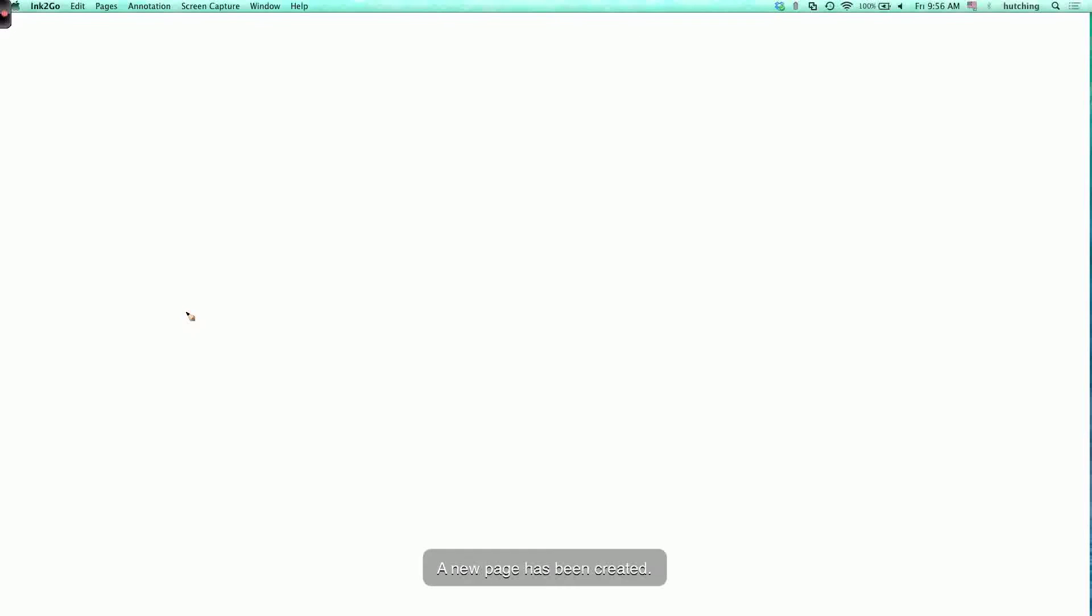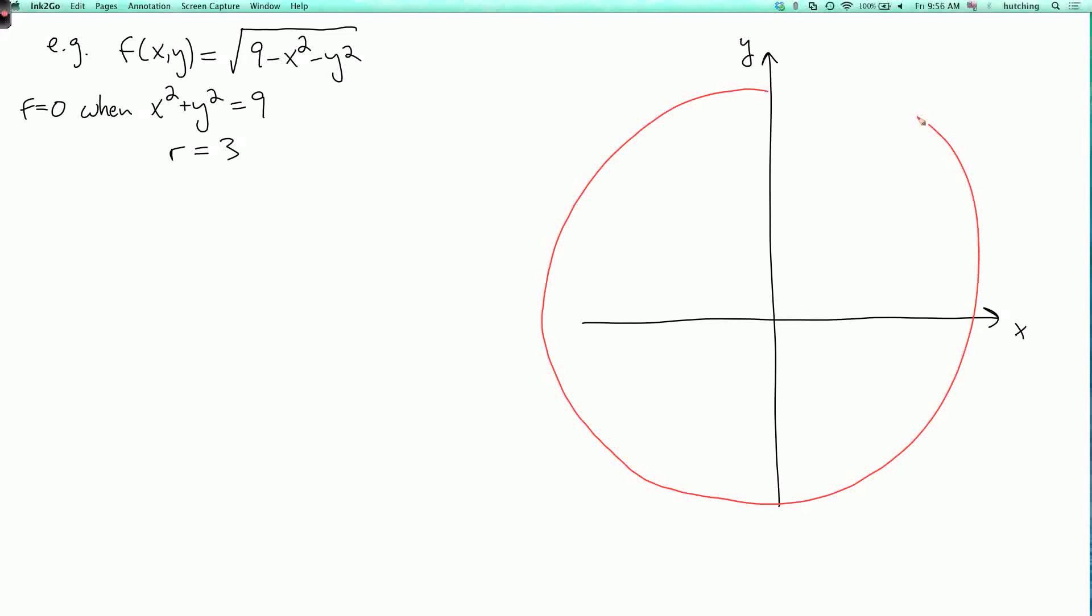So let's look at our next example. f of x, y equals the square root of 9 minus x squared minus y squared. So let's draw the contour lines, or level sets, or level curves, in the x, y plane over here. So f equals 0 when x squared plus y squared equals 9. Or in polar coordinates, the distance r to the origin is 3. So let's draw that curve first. It's hard to draw a perfect circle, but anyway. So here's where f equals 0, and this is where r equals 3.